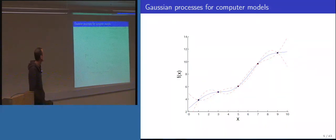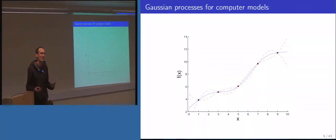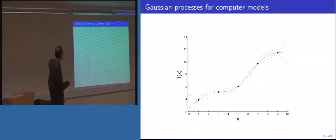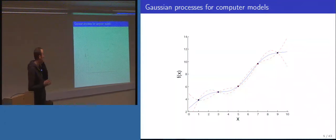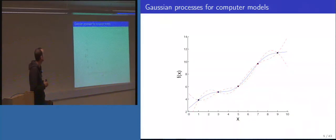Let's say we've got a one-dimensional model. We choose a small number of input points, run the model, and fit a Gaussian process to it. Usually we're working with deterministic models, so running the model twice at the same input gives exactly the same output. One nice thing about the Gaussian process model is that if you don't put any noise in your covariance function, it interpolates the data exactly — you get zero uncertainty at training points, and uncertainty grows as you move away.